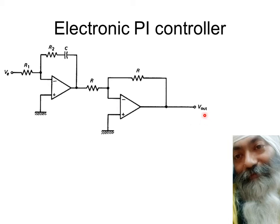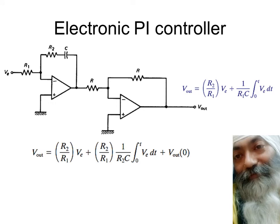The Vout in this case comes out to be equal to R2 upon R1 into VE plus 1 upon R1C - mind you it is R1C. This R1 is over here. We can always write this R1 - we multiply by R2 and divide by R2. This is done deliberately so that R2/R1 forms the proportional gain, and 1 upon R2C forms the integral gain.